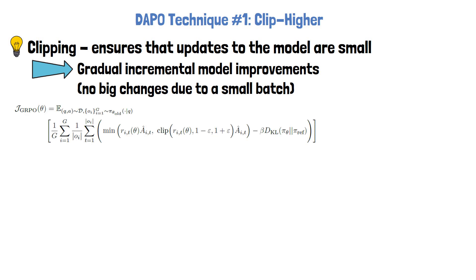In GRPO, the clipping factor is determined by epsilon in the objective, restricting the policy ratio to a trust region between 1 minus epsilon to 1 plus epsilon, where a common default value is 0.2.